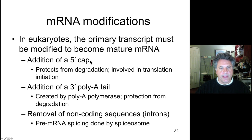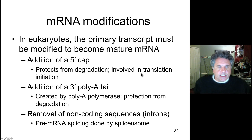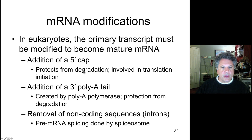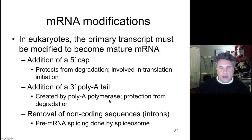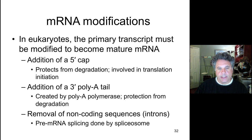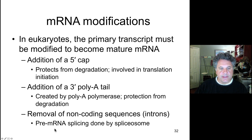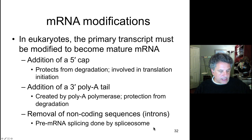The 5' cap is involved in translation initiation because the ribosome binds it, and it also protects the RNA from degradation. The 3' poly-A tail, generated by poly-A polymerase, also protects the RNA from degradation. The length of the poly-A tail is correlated to the half-life of the messenger RNA in the cell — the longer the half-life, the more protein will be produced. This is a potential point of regulation of gene expression. Splicing of introns is performed by a macromolecular assemblage called the spliceosome.